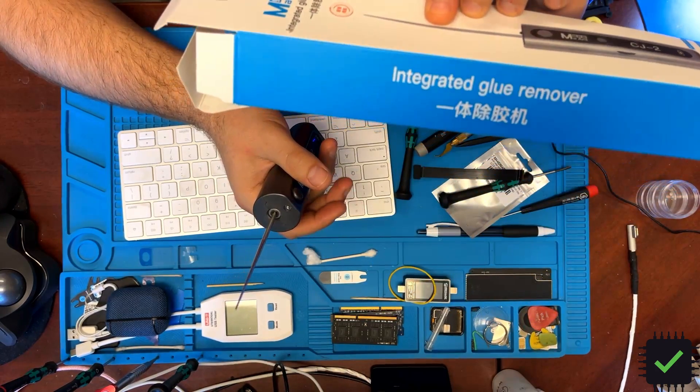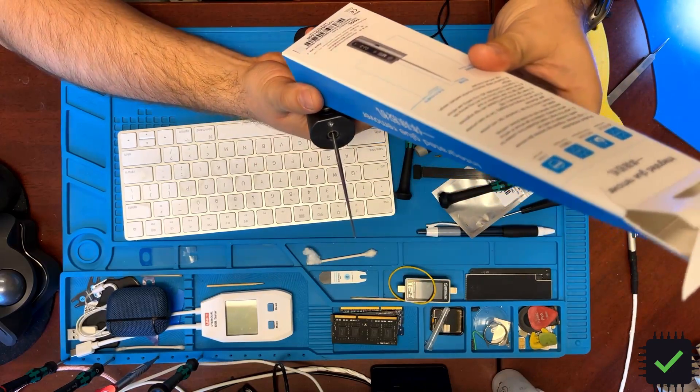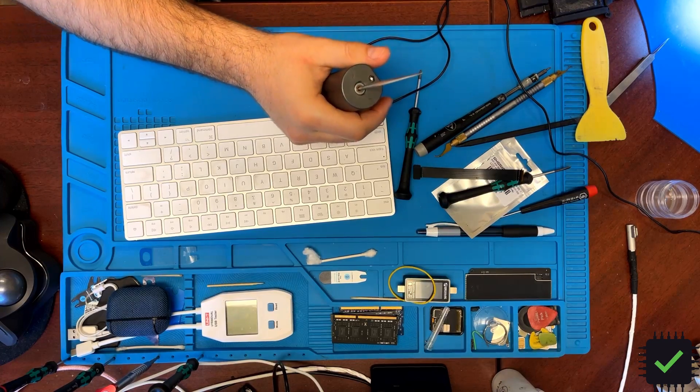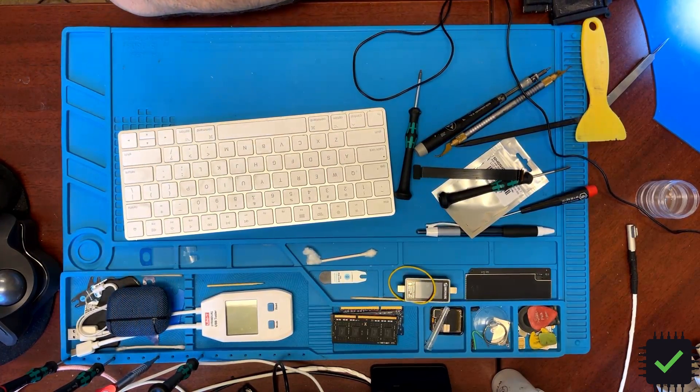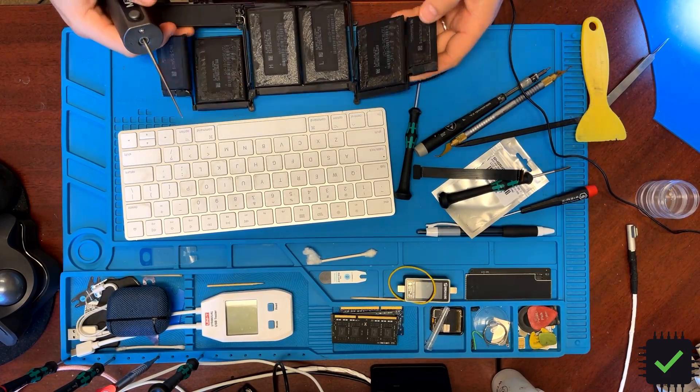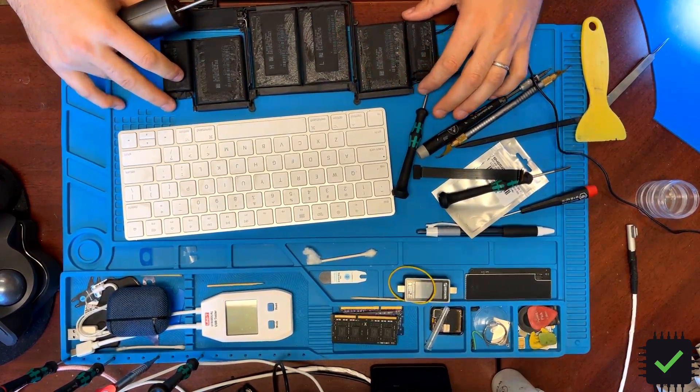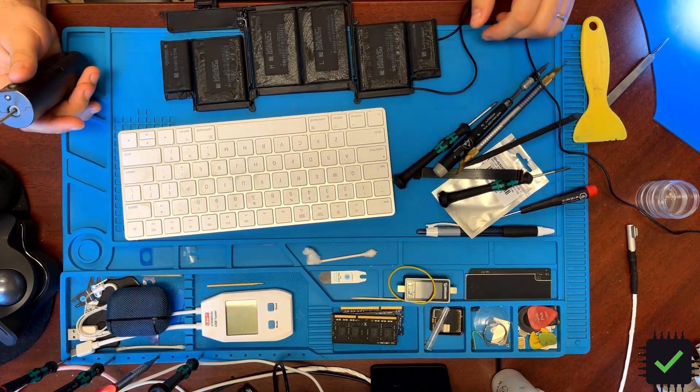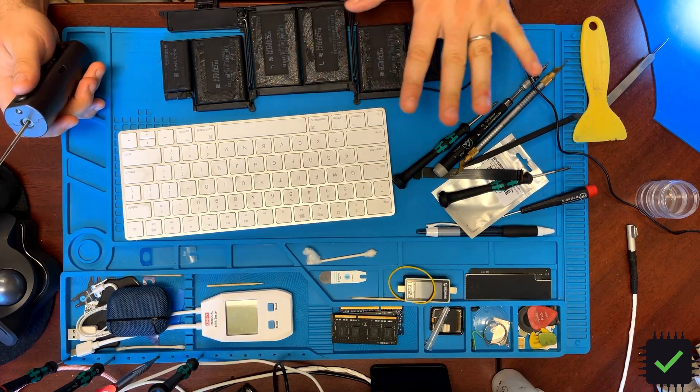This is basically a glue remover. I think it's used for refurbishing screens but this works on all other things like for example this battery I'm reusing. I cut it out from the housing and put it in another housing, another palm rest, and I have to remove the glue.